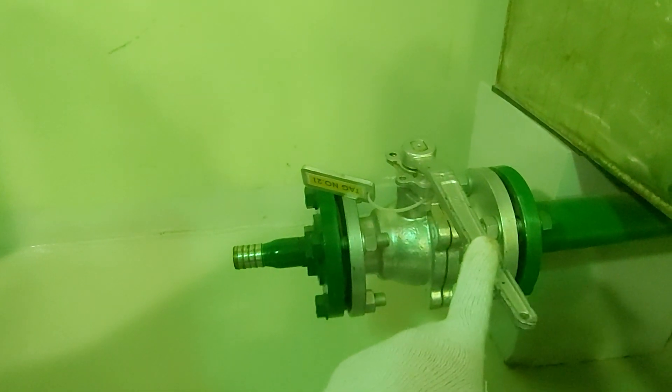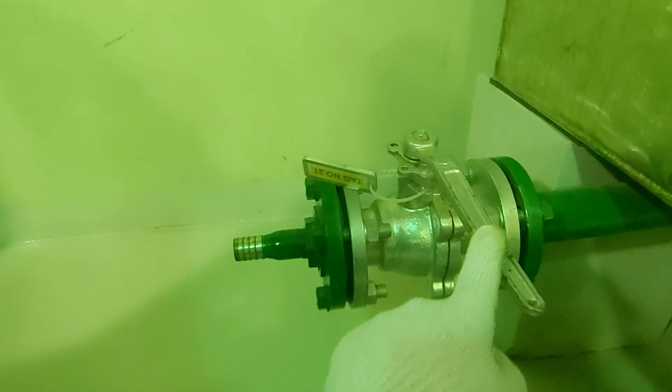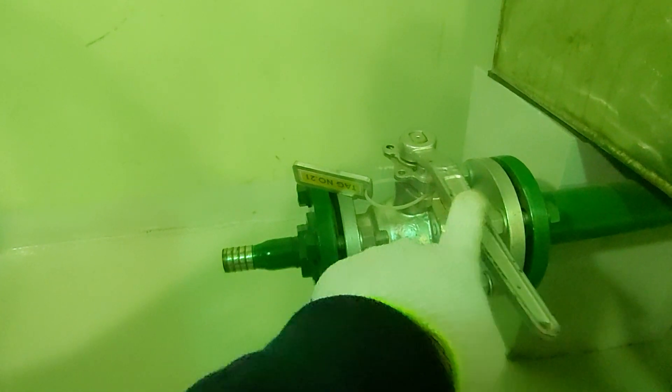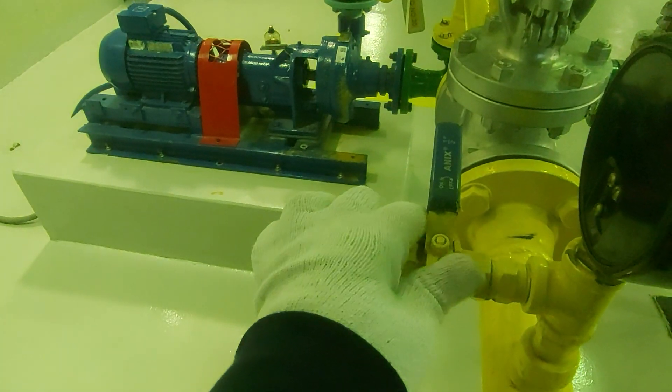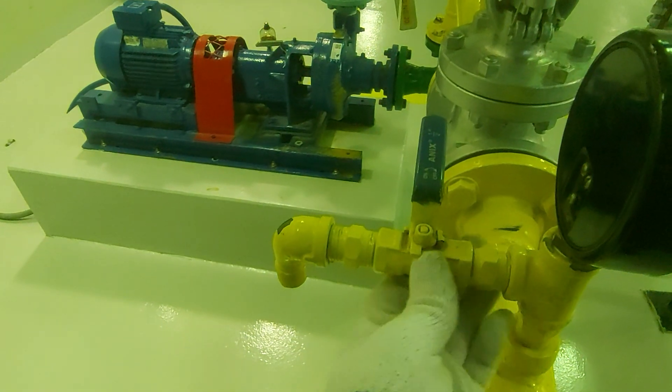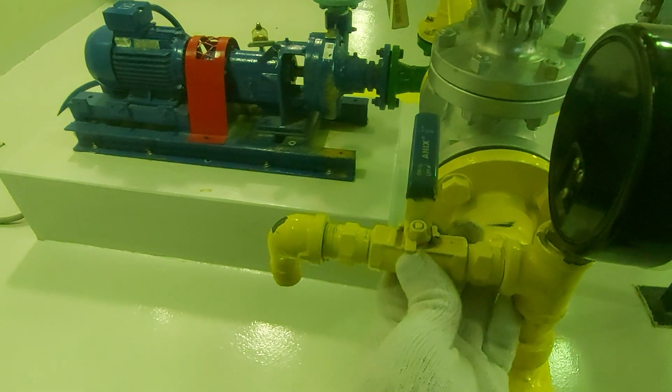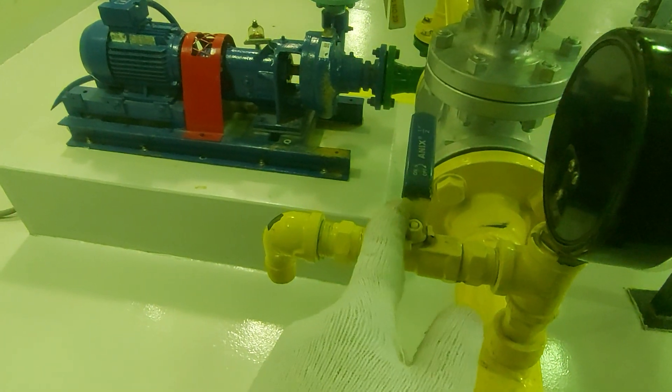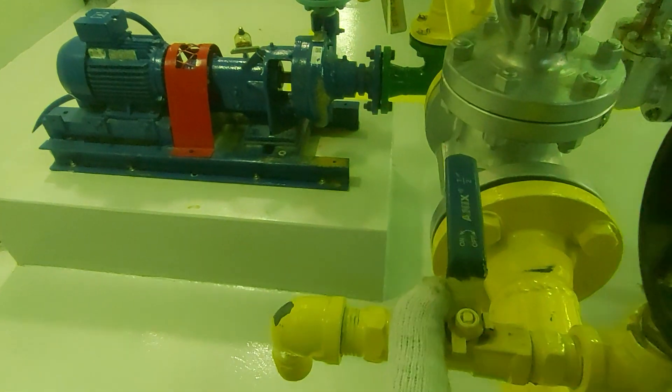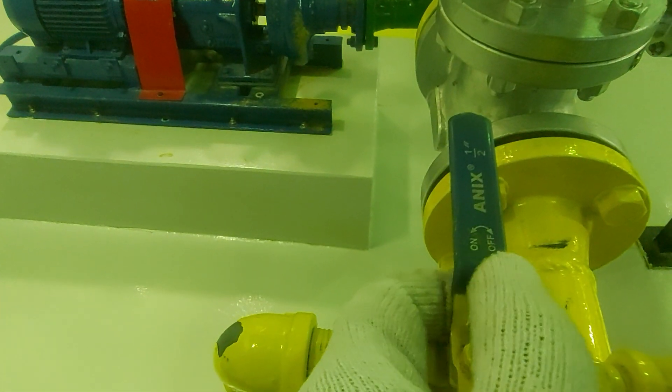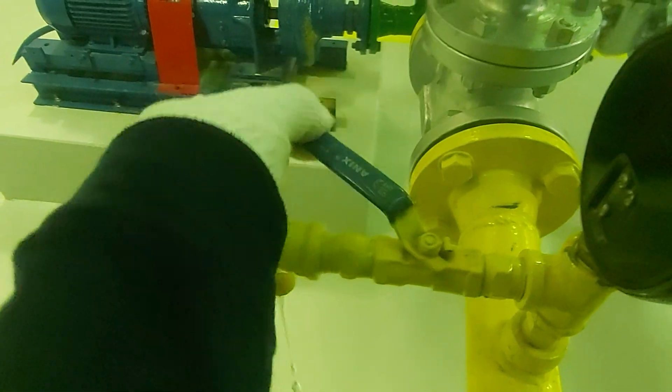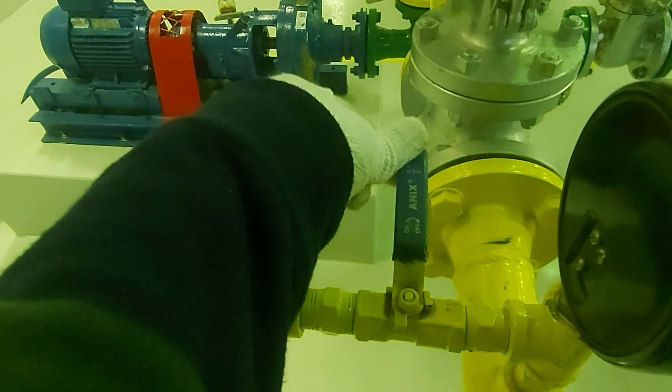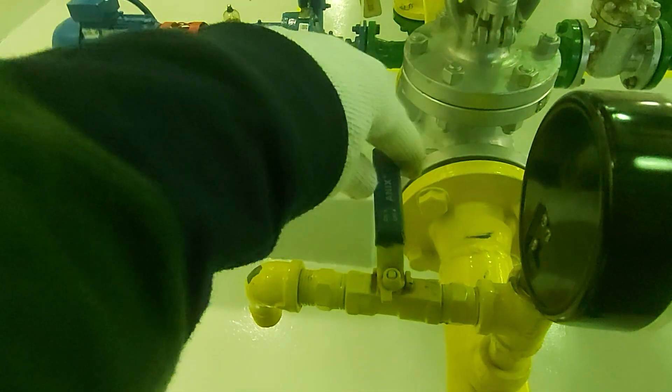This is also a ball valve, a smaller version. So when it is away from the line 90 degrees, it is closed. You can see on and off also. When I make it in line, it opens, and this way it closes.